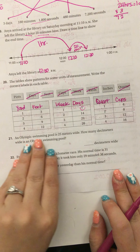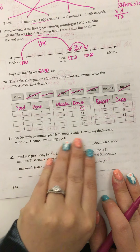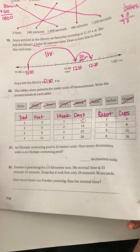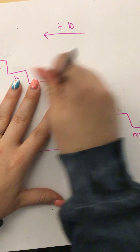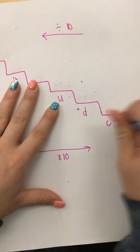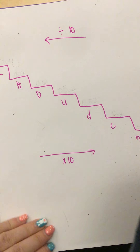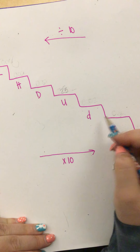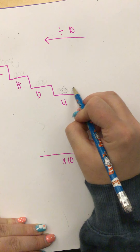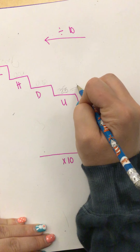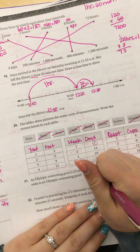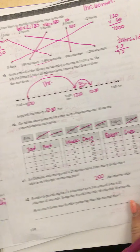An Olympic swimming pool is 25 meters wide. How many decimeters? Going down the staircase on the metric chart means multiplying by 10, so 25 times 10 equals 250 decimeters wide.